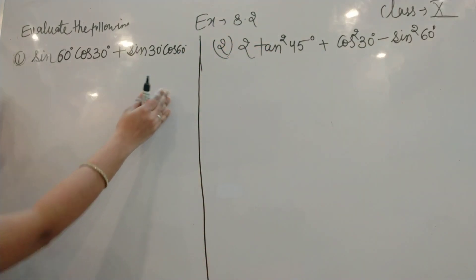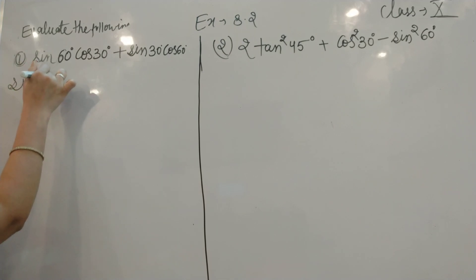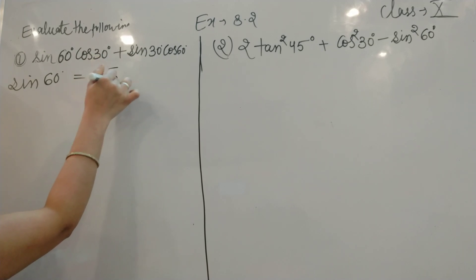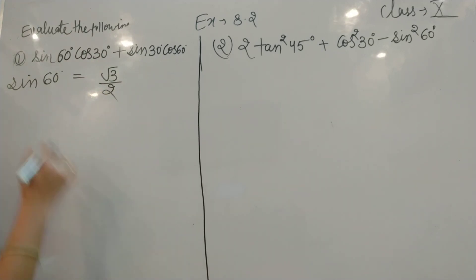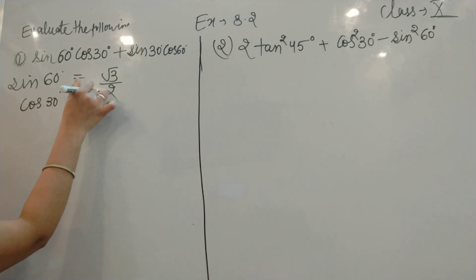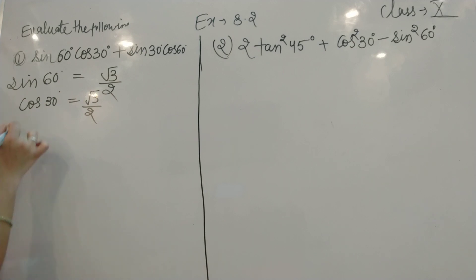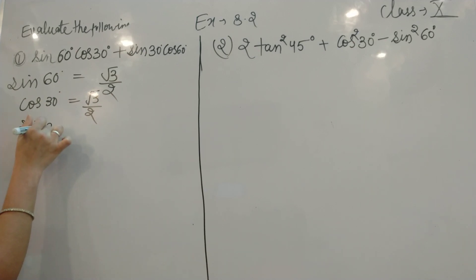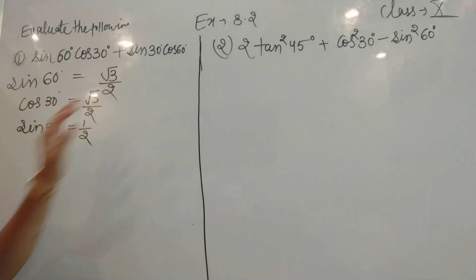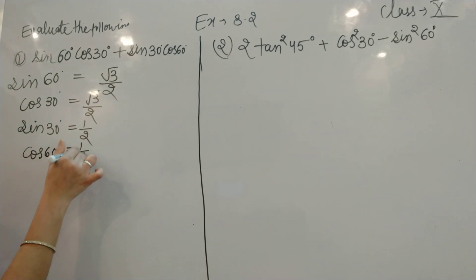So first we will discuss the first one. We know that sin 60° equals √3/2, cos 30° equals √3/2, sin 30° equals 1/2, and cos 60° equals 1/2.